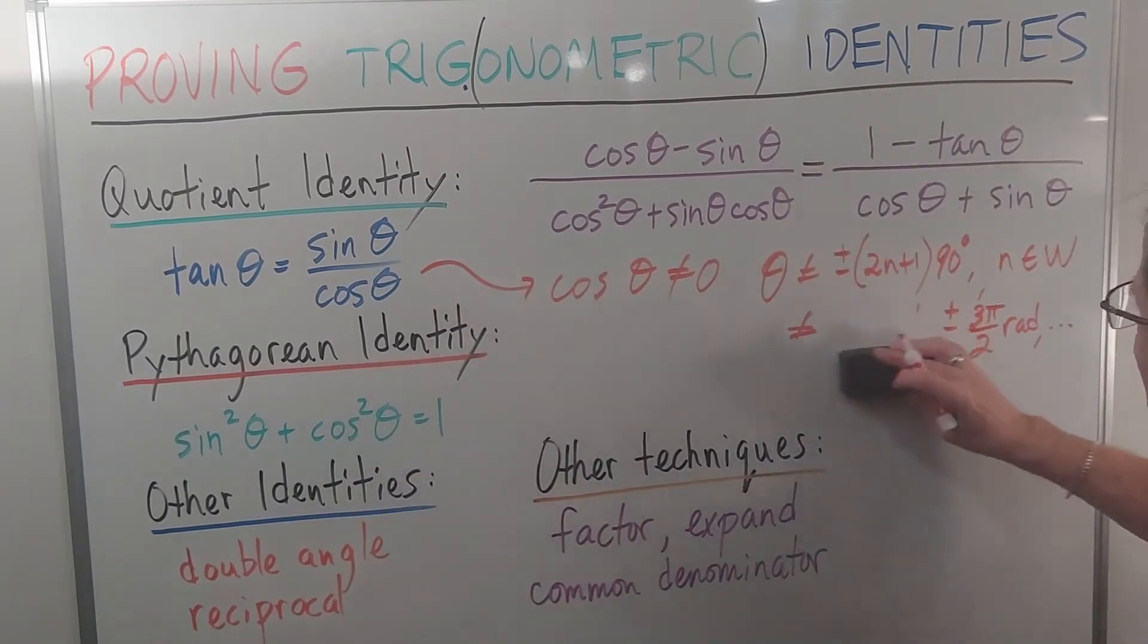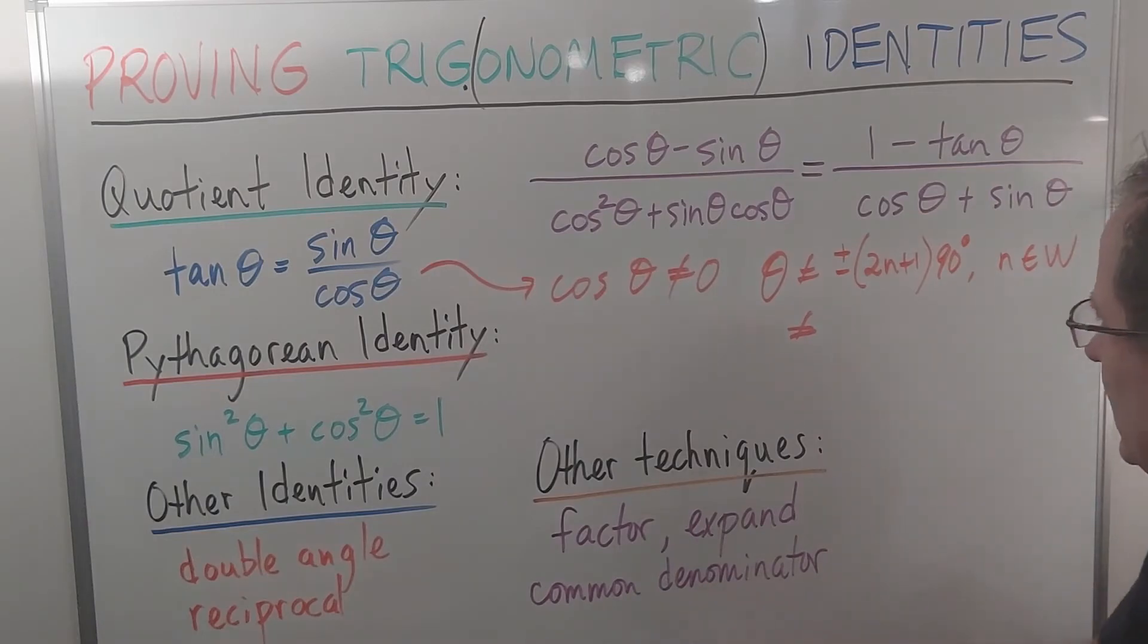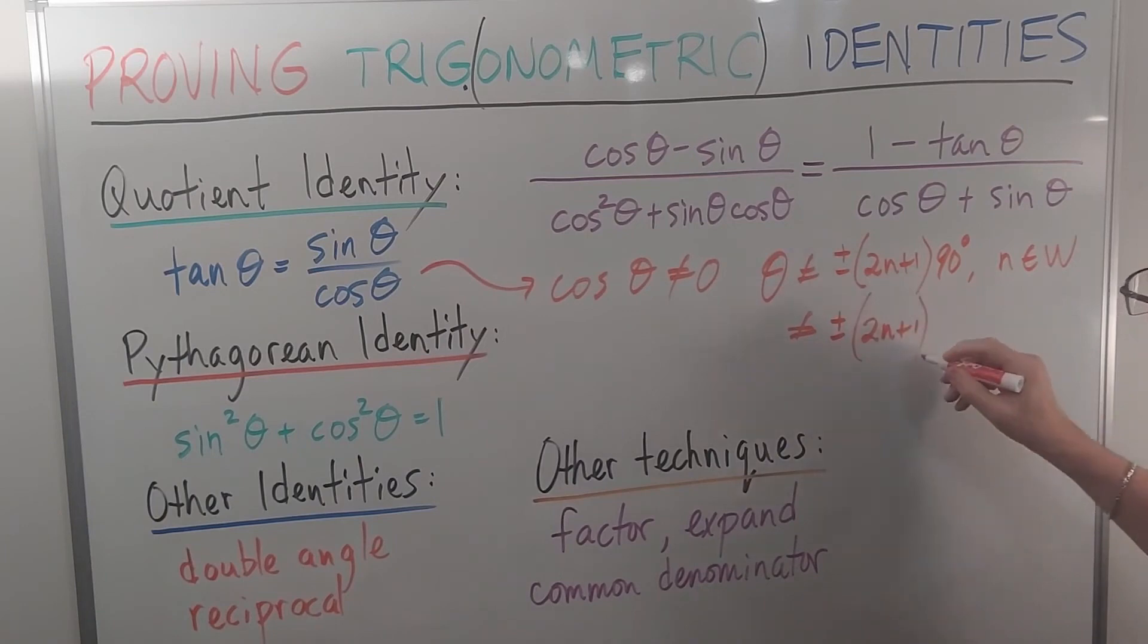Or for radians, it could not equal plus or minus (2n+1)π/2 radians, with the same values of n.